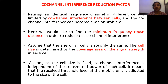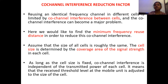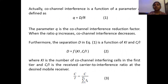Assume that the size of all cells is roughly the same. The cell size is determined by the coverage area of the signal strength in each cell. As long as the cell size is fixed, co-channel interference is independent of the transmitted power of each cell. The received threshold level of the mobile unit is adjusted to the size of the cell. Co-channel interference is a function of the parameter q, defined as q equals d divided by r, where d is the distance between two co-channel cells using the same frequency and R is the radius of the cell coverage.